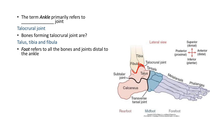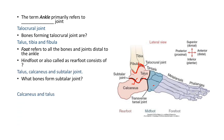We can divide the foot into three sections. The nude color is the rear foot, the blue color is the mid foot, and the gray color is the forefoot. The hind foot, also called rear foot, consists of the talus and the calcaneum bone. The hind foot also consists of the subtalar joint, which is the joint formed between the talus and the calcaneum bone.